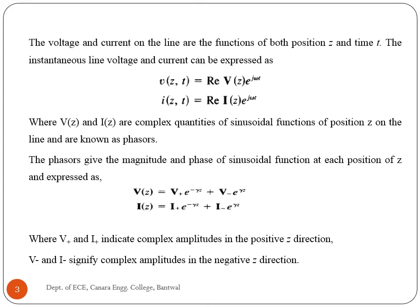The voltage and current on the line are functions of both position Z and time T. The instantaneous line voltage and current can be expressed in phasor form, where V(z) and I(z) are complex quantities of sinusoidal functions of position Z, known as phasors. V⁺ and I⁺ indicate complex amplitudes in the positive Z direction; V⁻ and I⁻ indicate complex amplitudes in the negative Z direction. Gamma (γ) is the propagation constant: γ = α + jβ.